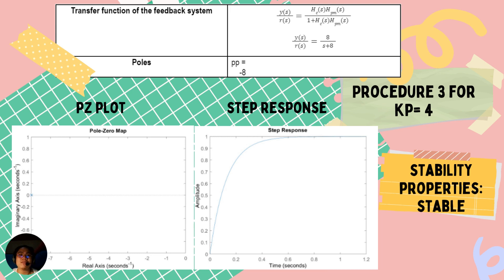For Kp = 4, using MATLAB functions, the simplified transfer function was defined as 8/(s+8), with poles at negative 8. The PZ plot and step response present that the transfer function is also stable.